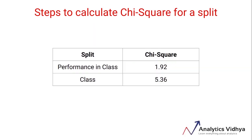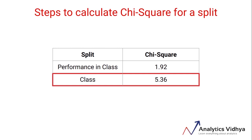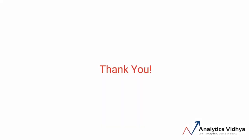We will split on the class variable since it has the higher chi-square value of 5.36. Remember, we got the same result using the Gini index as well. So we've now covered two different algorithms and both give similar results. In the next video, we'll look at one more commonly used algorithm for deciding the best split when dealing with categorical target variables.